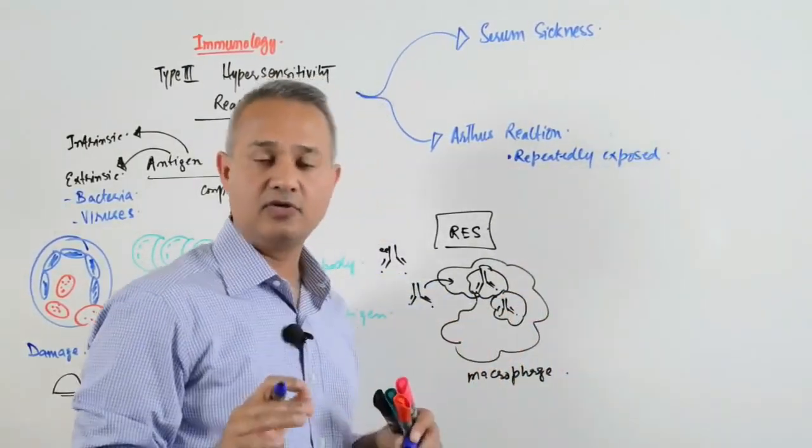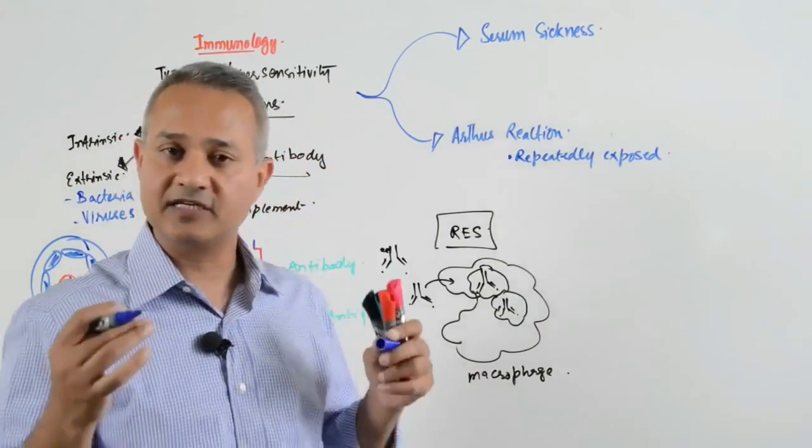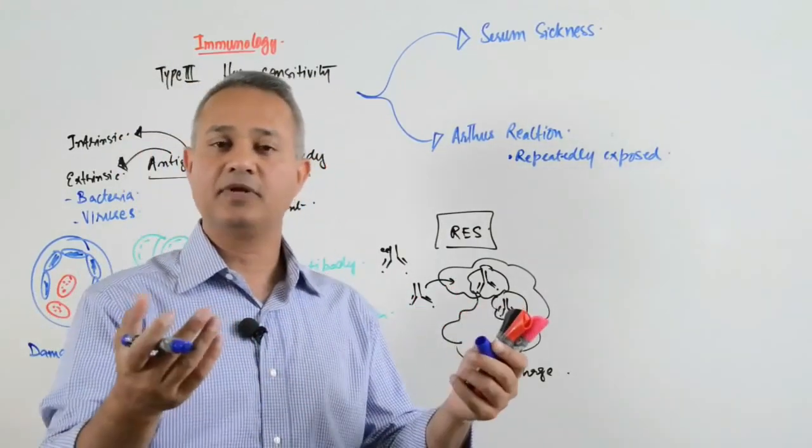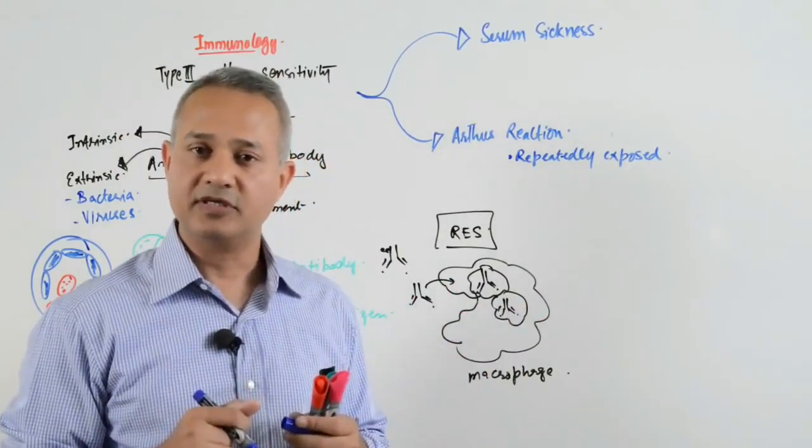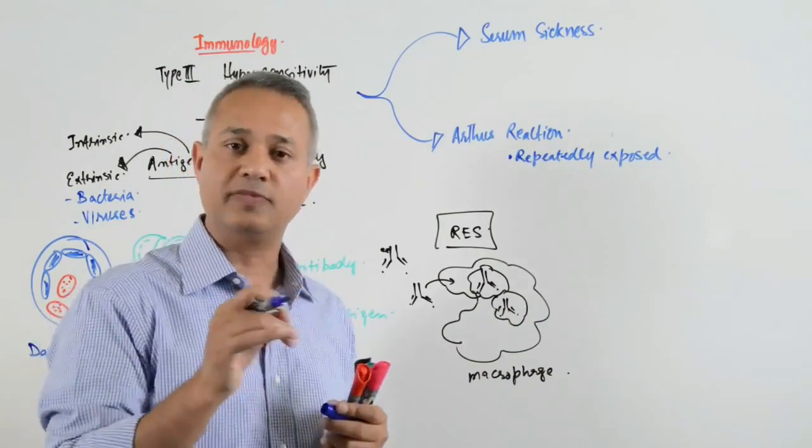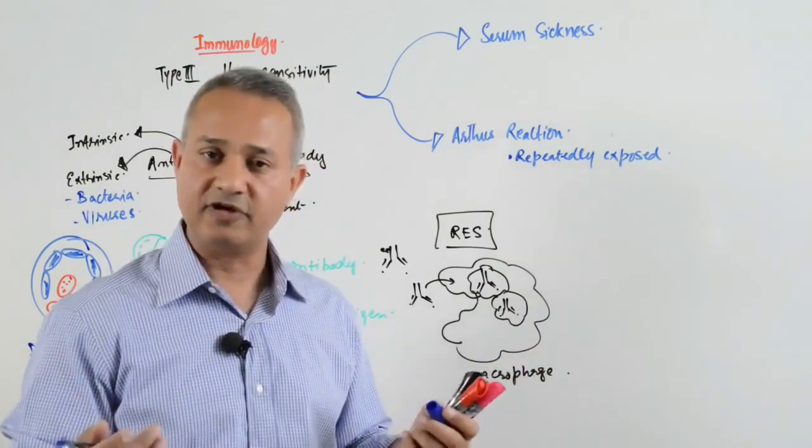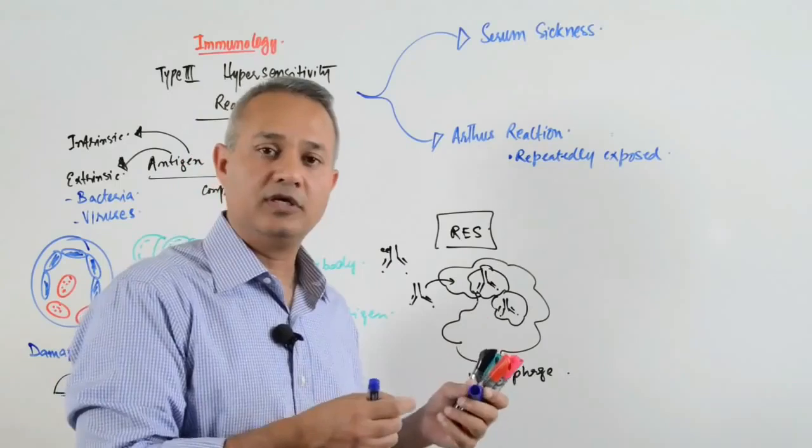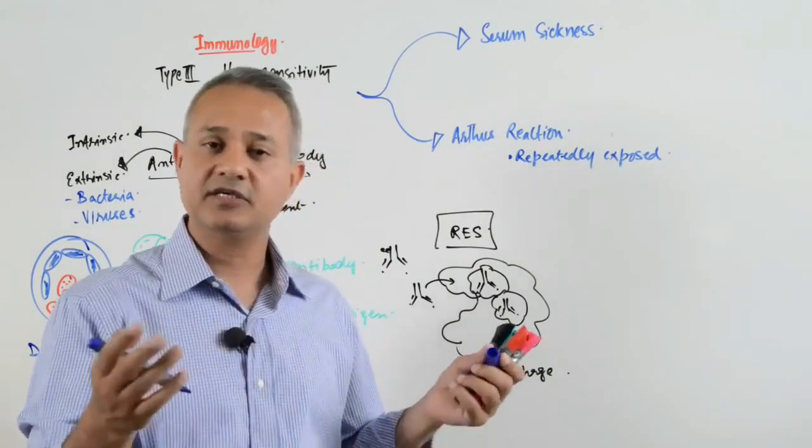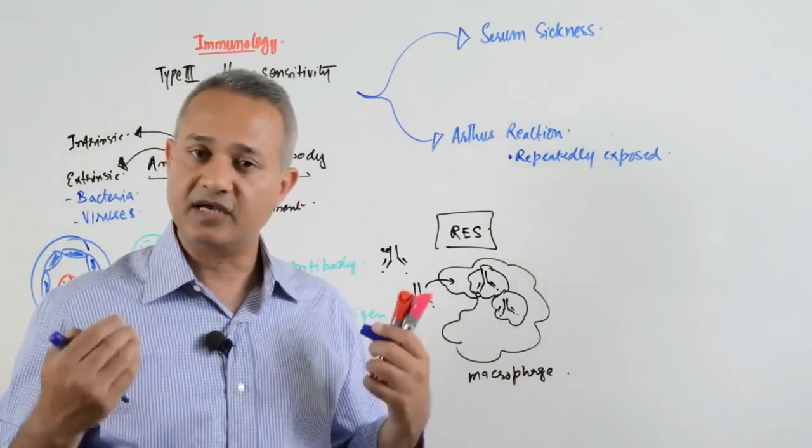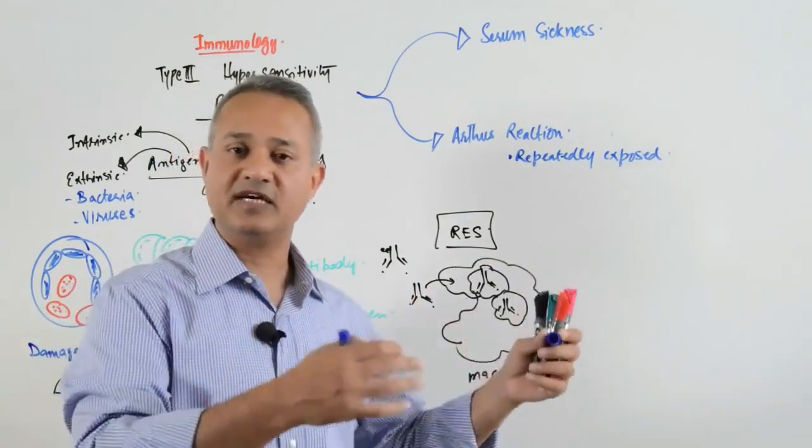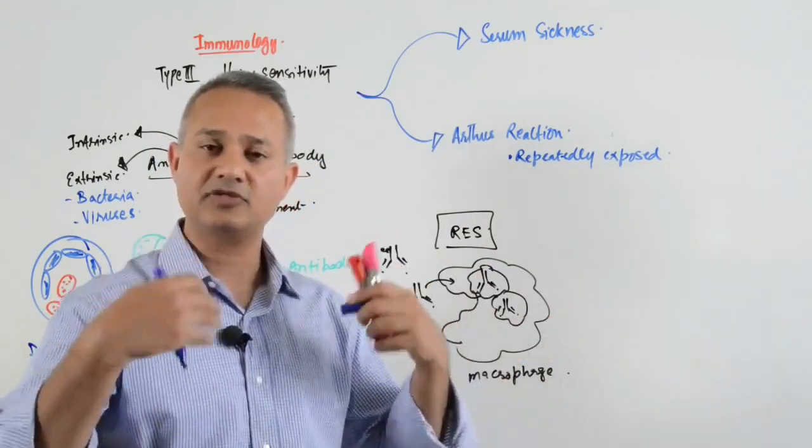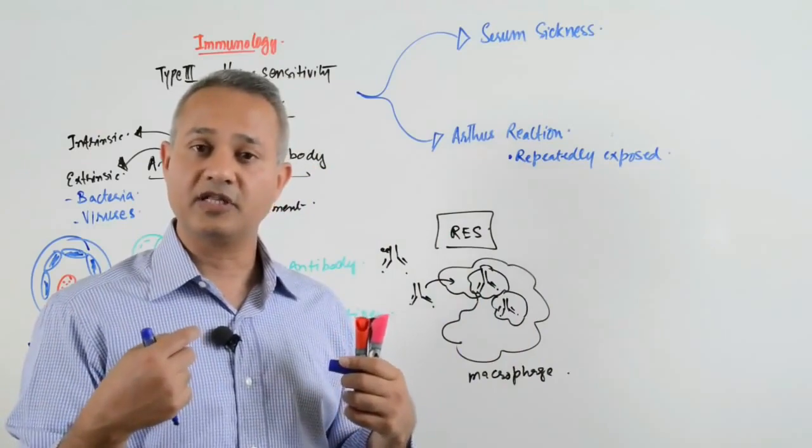When a person is repeatedly exposed to an antigen, for example, farmers exposed to actinomycetes causing hay fever, or cheese workers exposed to lung antigens that are continuously incorporated in the body.